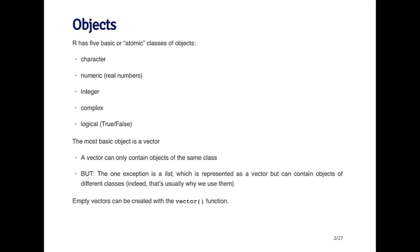Everything in R is an object. So R has five basic atomic classes of objects. These are the very low level or basic classes of objects, and they are character, numeric (like real numbers or decimal numbers), integers, complex numbers, and logical. So logicals are just true, false type things.